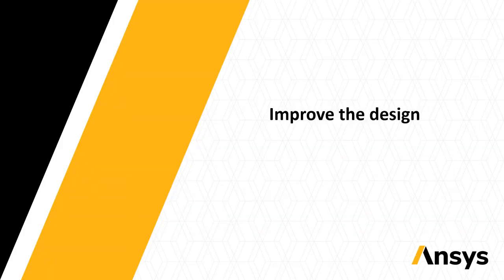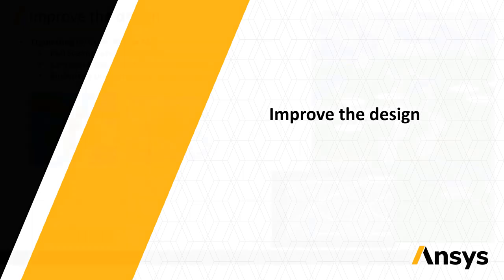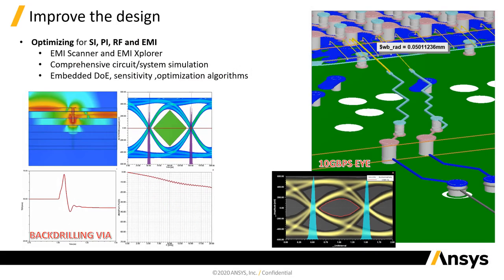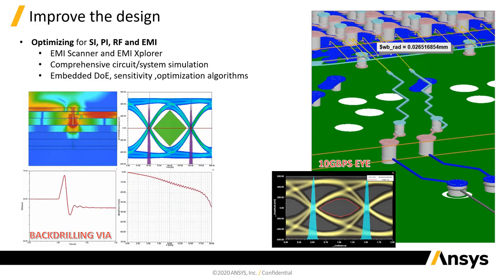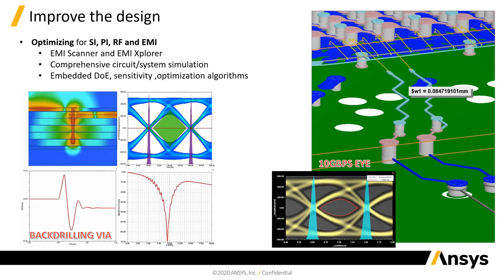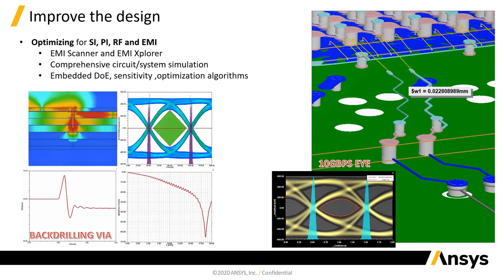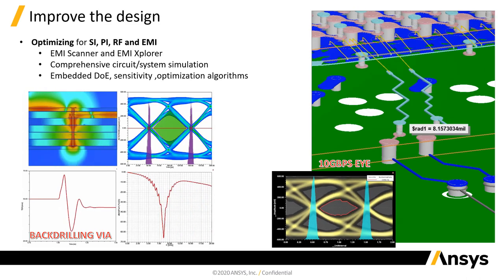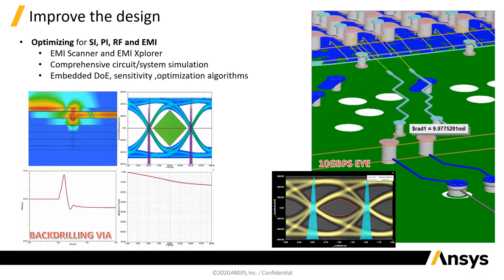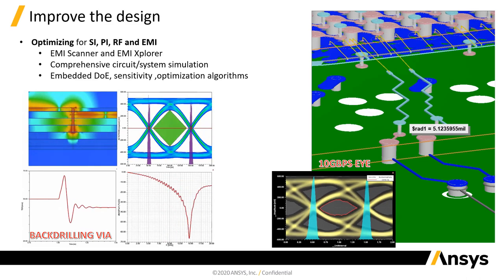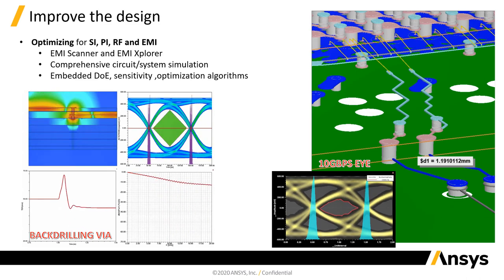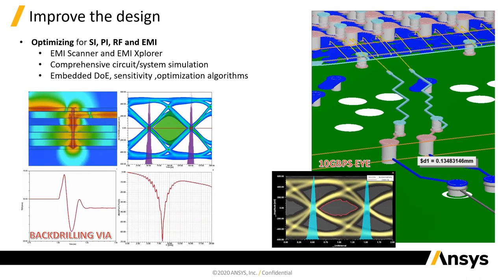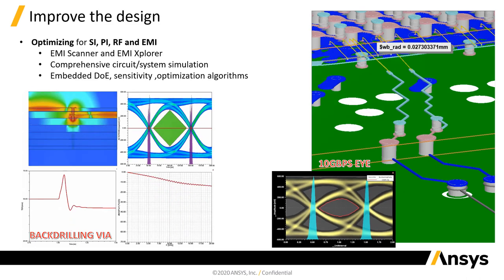Let's talk about the first stage: improving the design itself. Here we have animations showing things we can do with HFSS. On the left side, we have a back-drilling via — a process where we back-drill the via to remove the stub. We can see the electric field and, as we perform the back-drilling, we achieve much better improvement on both the TDR and insertion loss, and of course on the eye diagram.